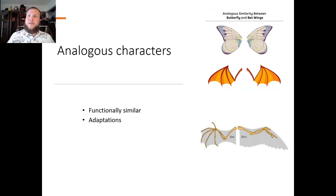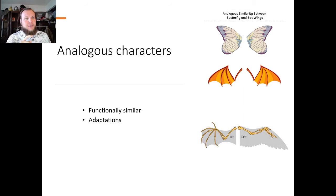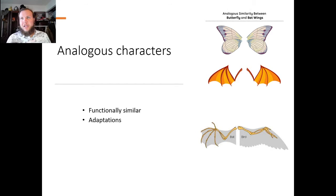Analogous characters are functionally similar. Here we have three types of wings that are functionally similar because they are adapted to flying — a butterfly, bat, and bird wing. They look similar yet are different. The bird has three fingers and a bat has five, which means they're functionally similar but don't have a common ancestor. That's important.